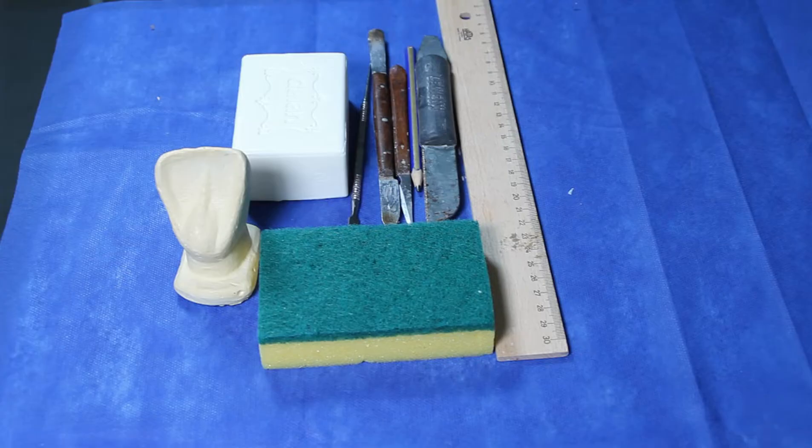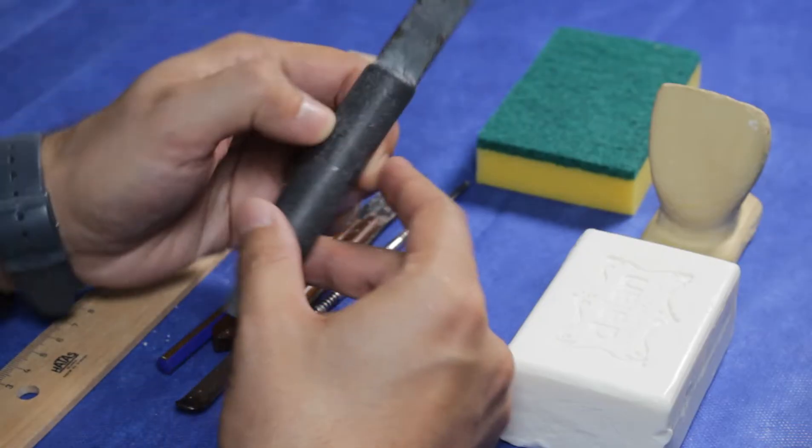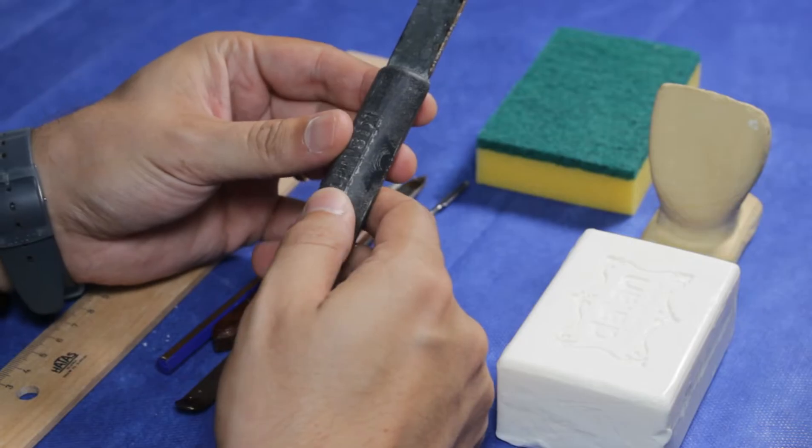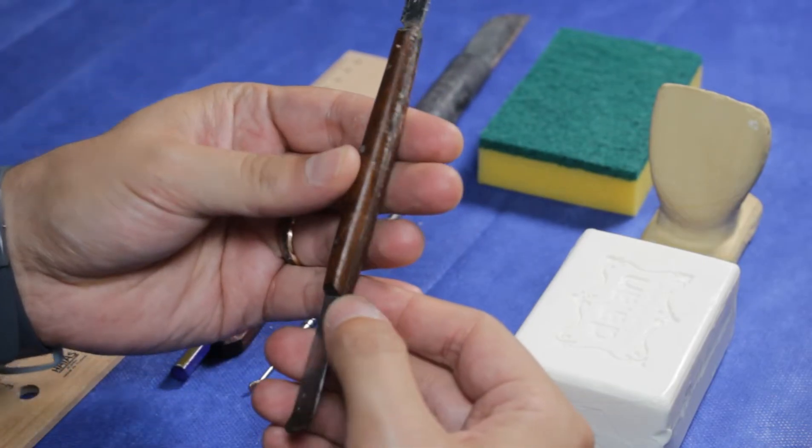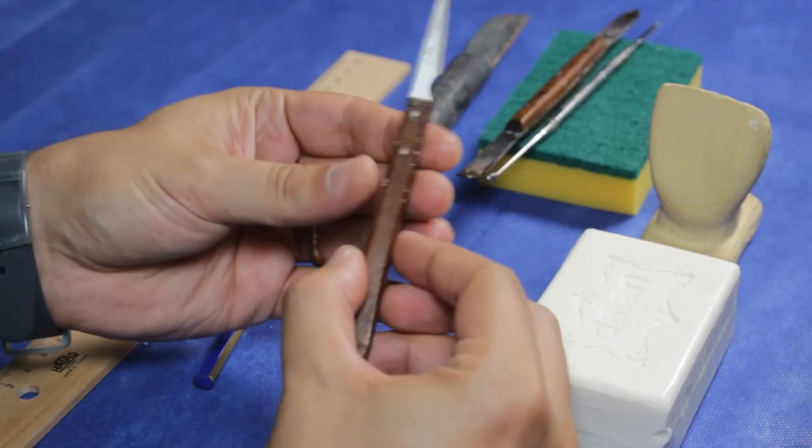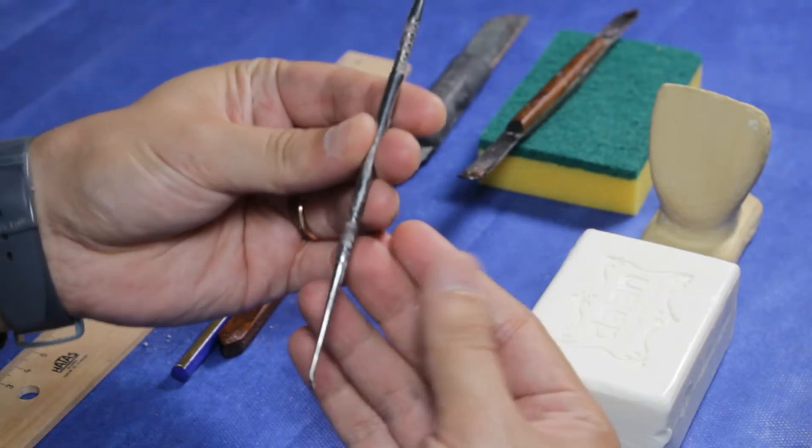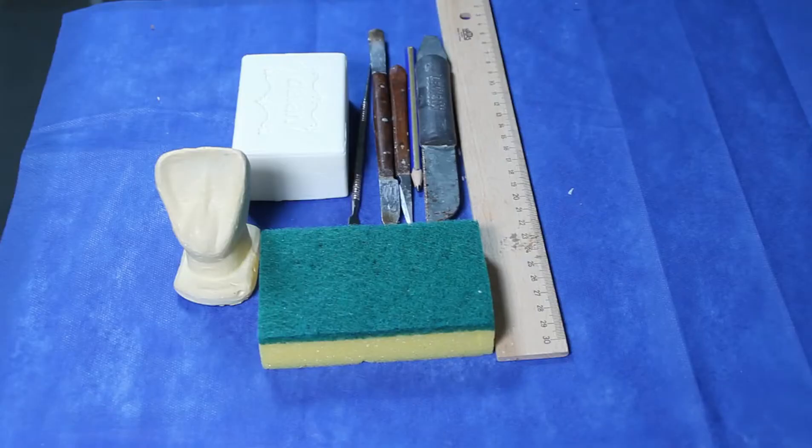First of all, let me show you the equipment we need. A 1000 gram soap, a plaster knife, wax knives, lacron carver, a ruler, marker or a pen, and a sponge.